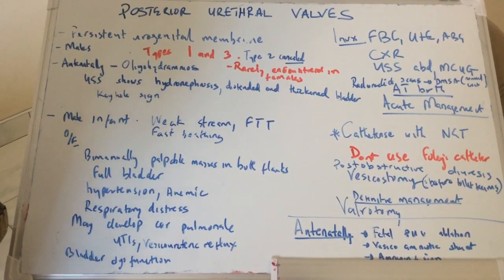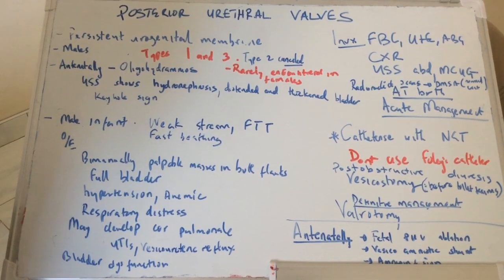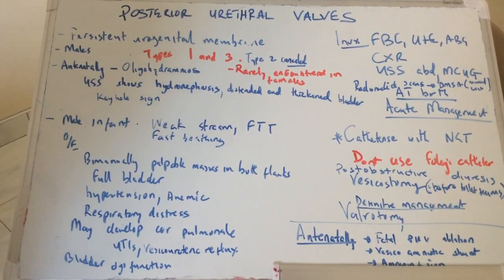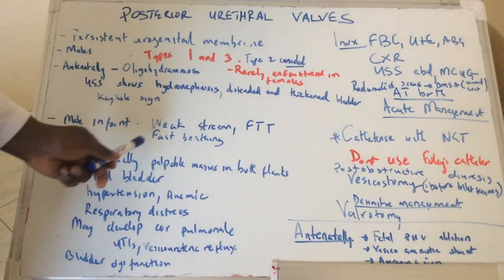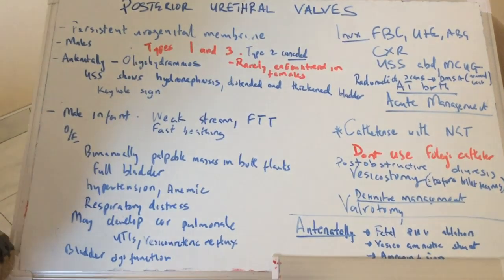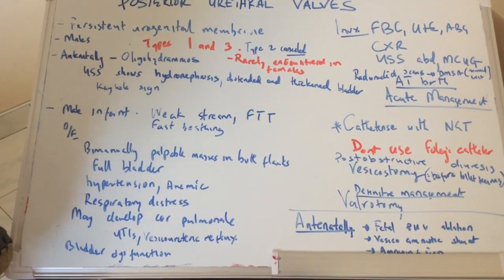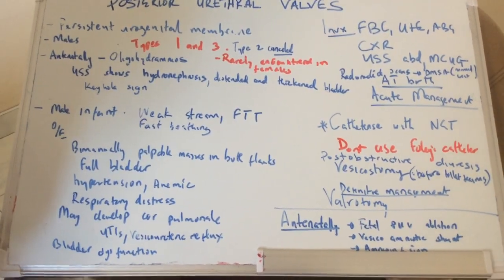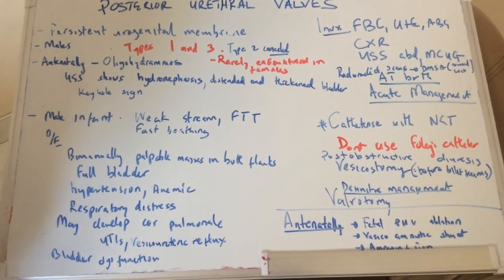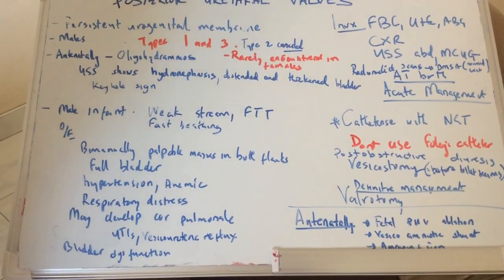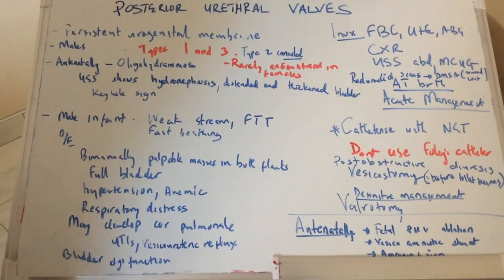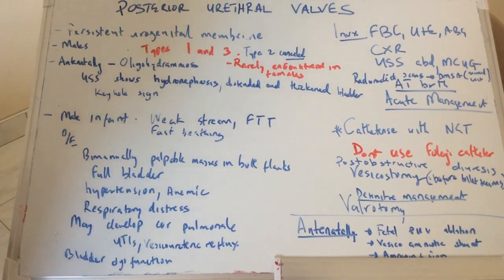There is also failure to thrive, which can occur because this condition can cause problems with renal failure and other problems. They can also present with fast breathing — fast breathing is because oligohydramnios, which occurs in utero, can cause lung hypoplasia. Amniotic fluid is very essential for the development of the lungs.